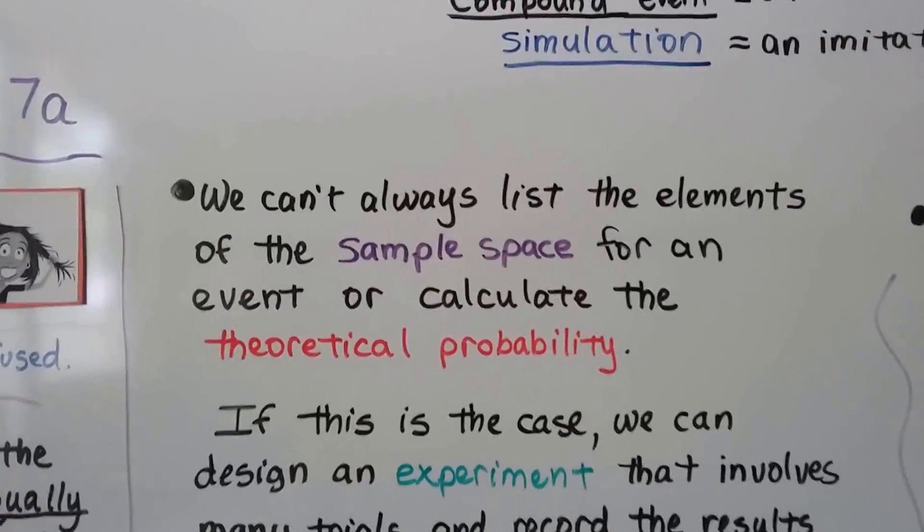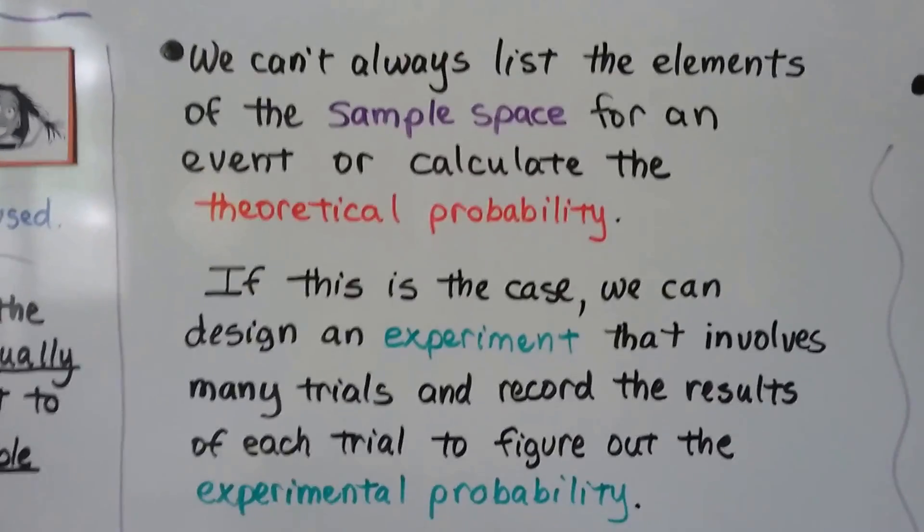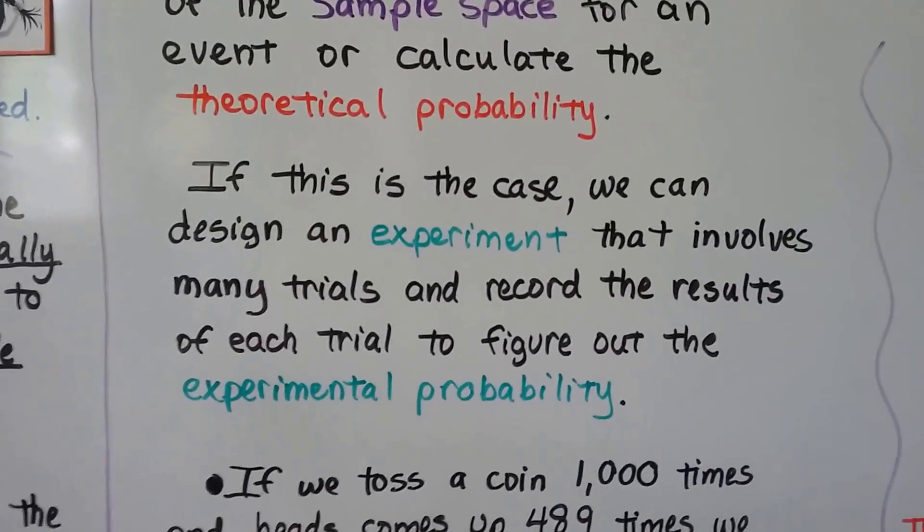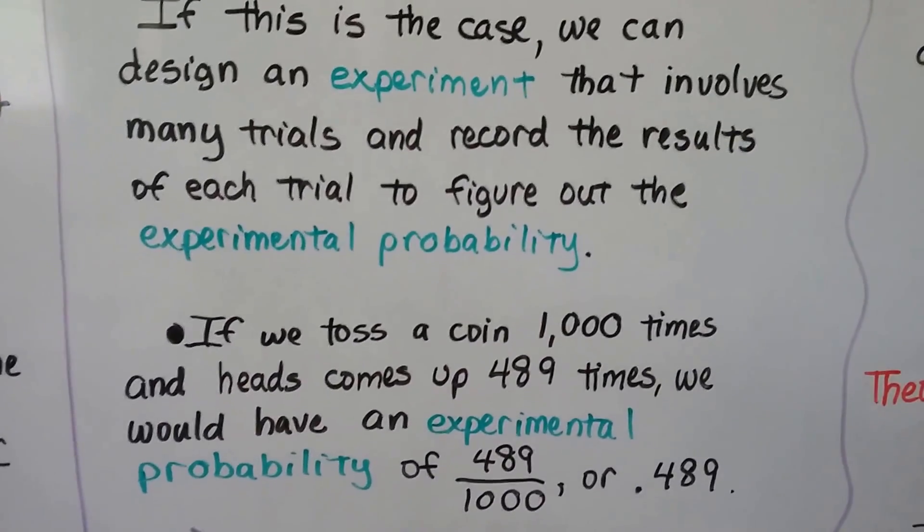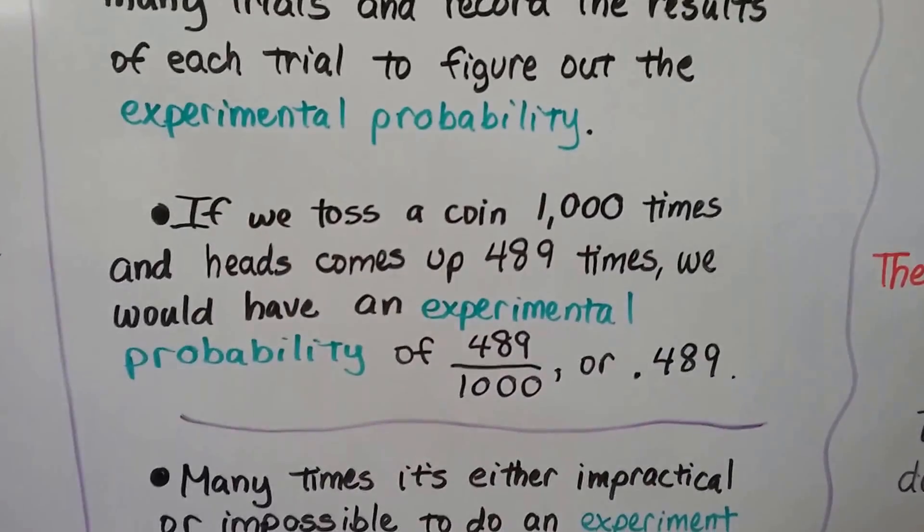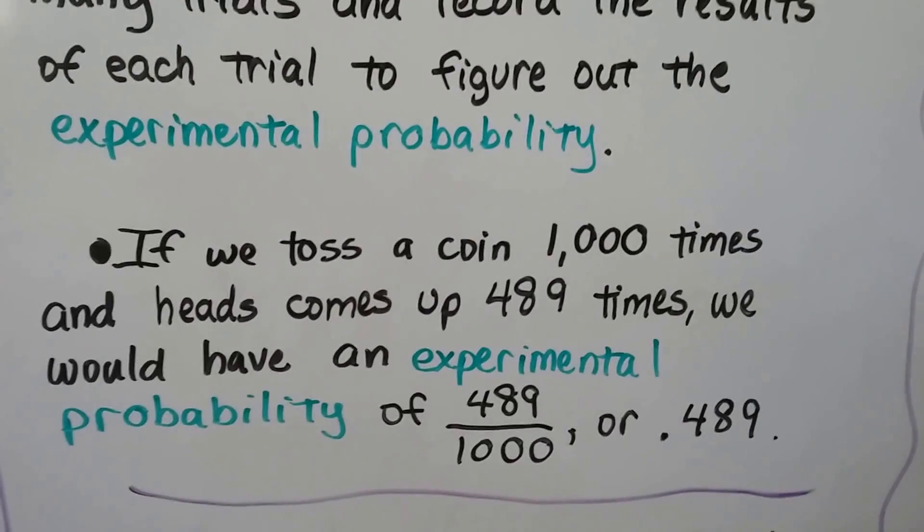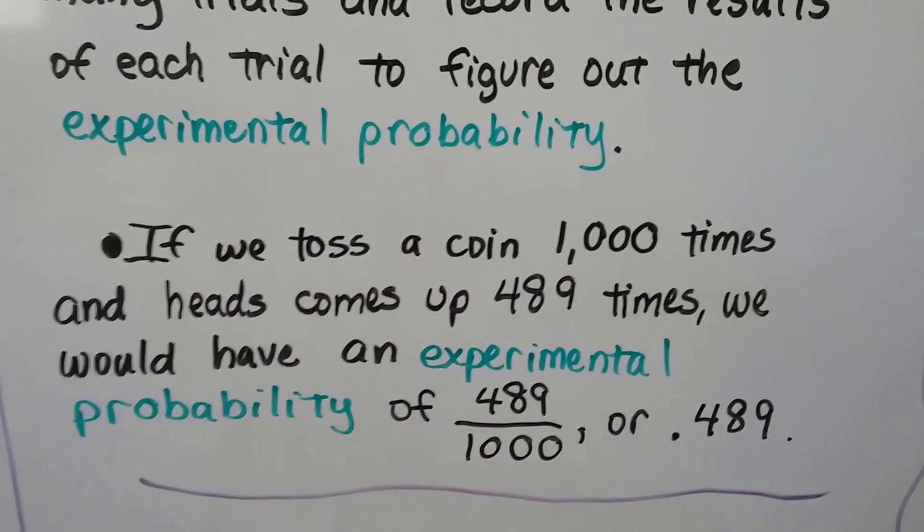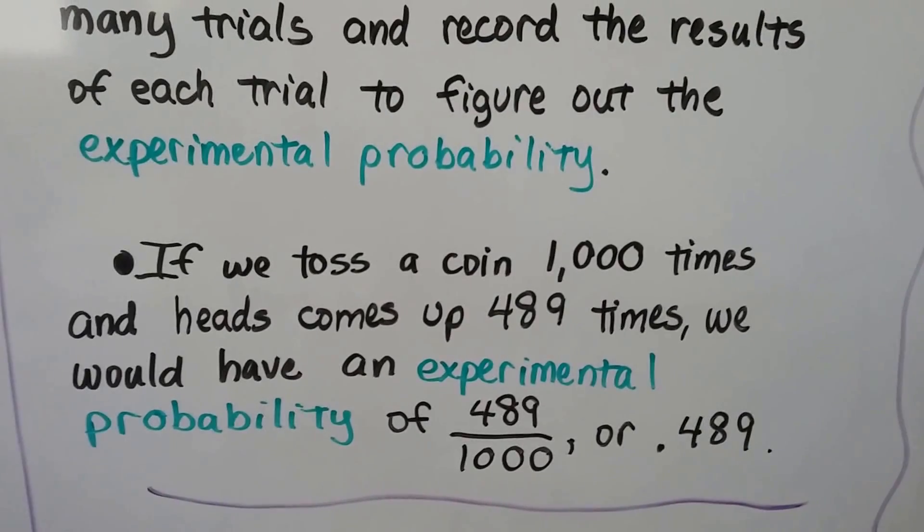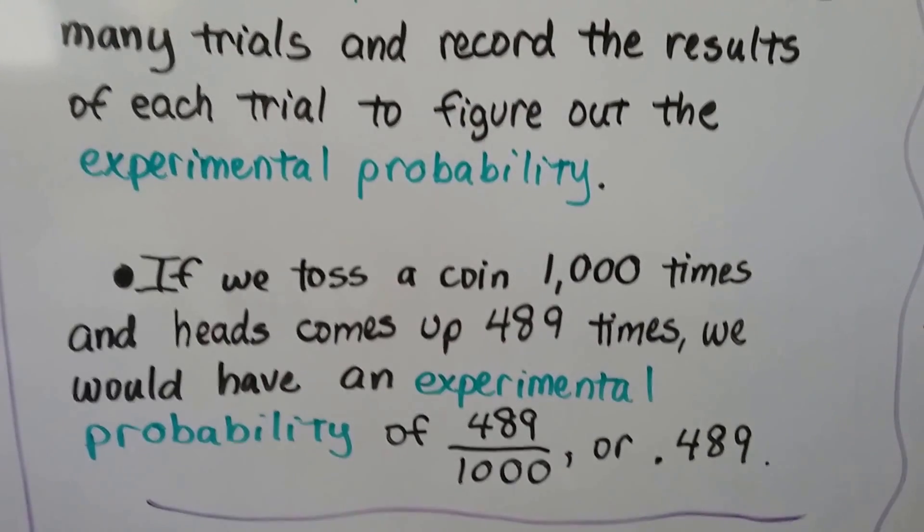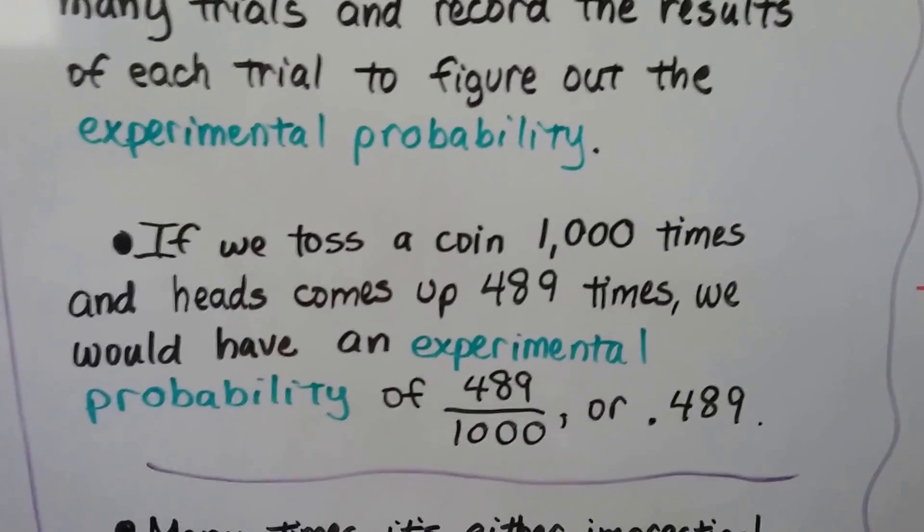We can't always list the elements of the sample space for an event or calculate the theoretical probability. If this is the case, we can design an experiment that involves many trials and record the results of each trial to figure out the experimental probability. If we toss a coin a thousand times and heads comes up 489 times, we would have an experimental probability of 489 one-thousandths or .489. We actually would be tossing the coin and that's why it's experimental.